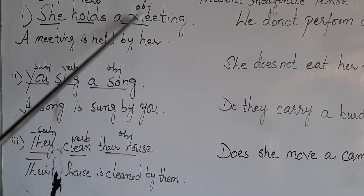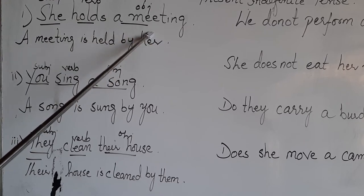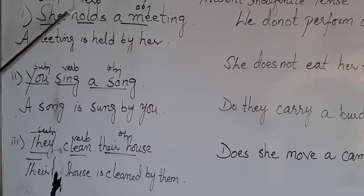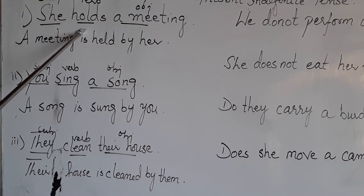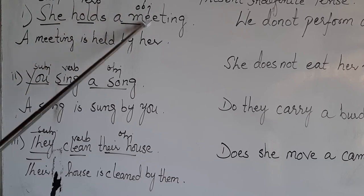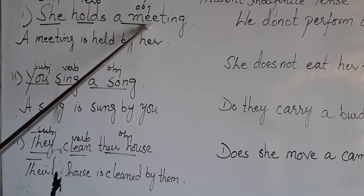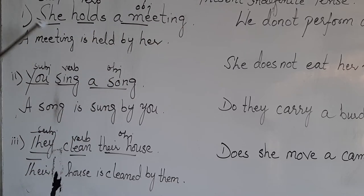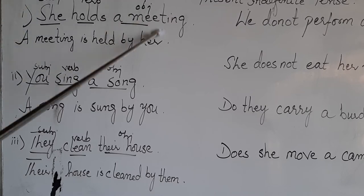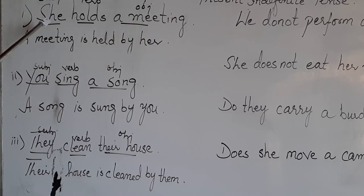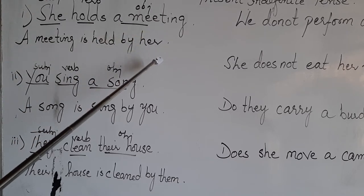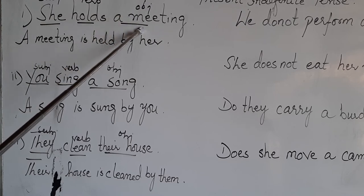We have subject, verb, and object to change. 'She' is the subject, 'holds' is the action word - what does she hold? She holds a meeting - 'a meeting' is the direct object. Now to change into passive voice, we change the subject and object places. The object 'a meeting' comes first as the subject. Since it is present tense with a singular subject, we use the helping verb 'is'.